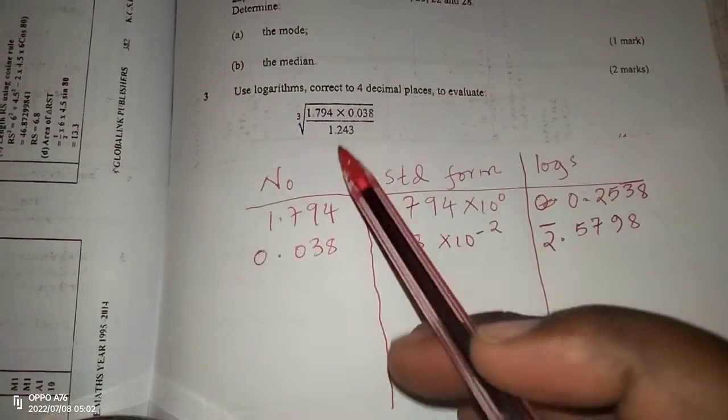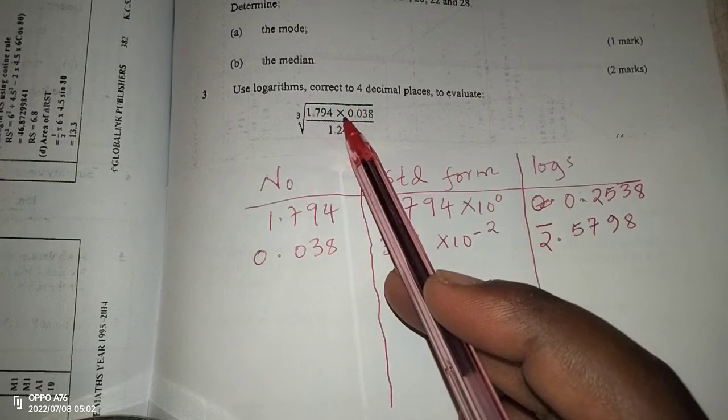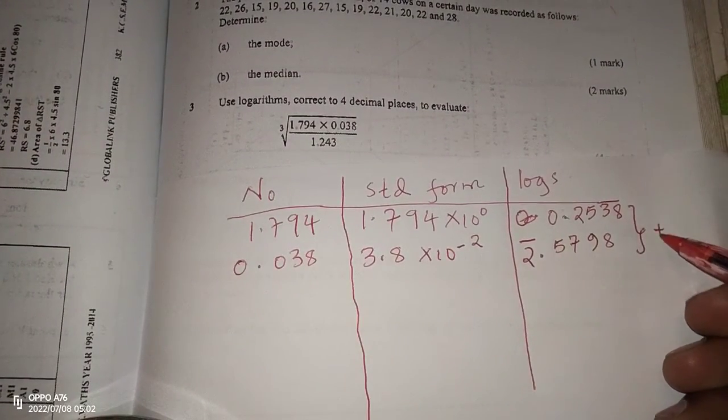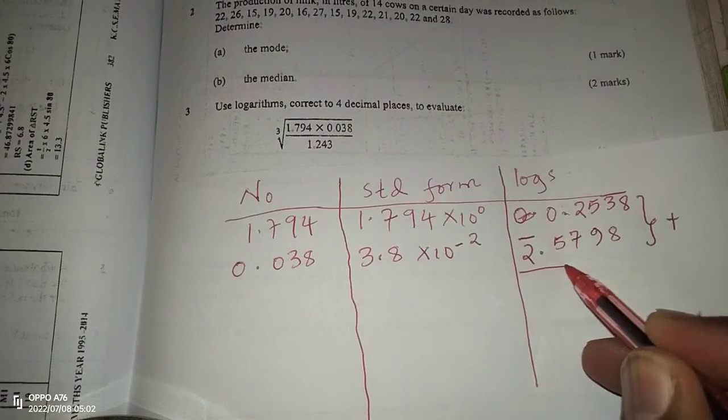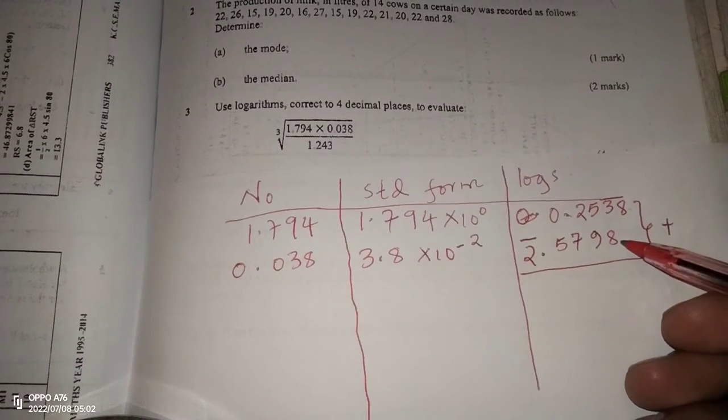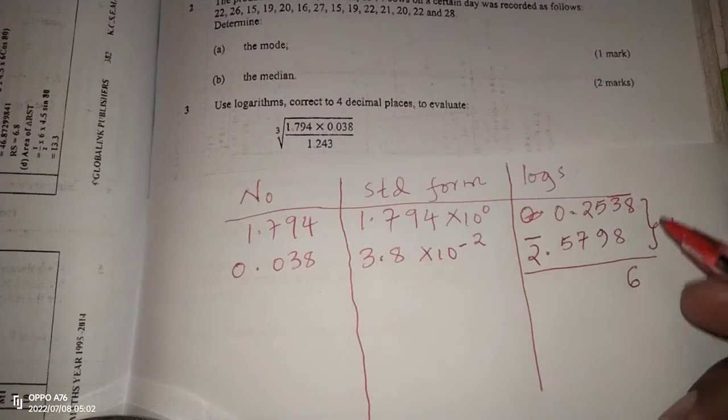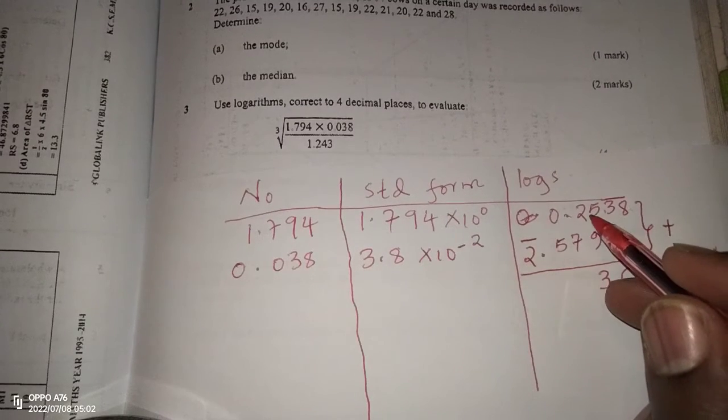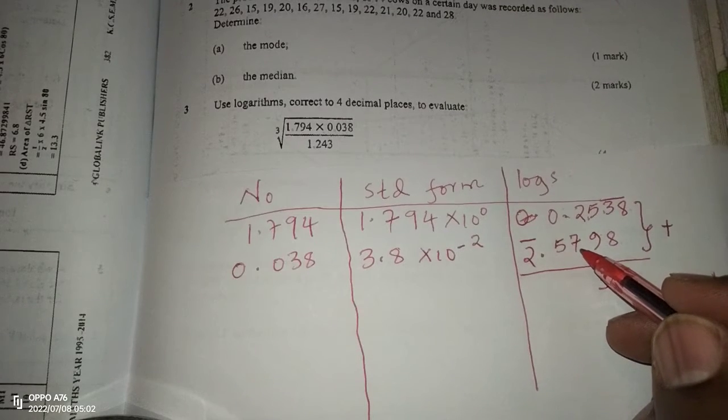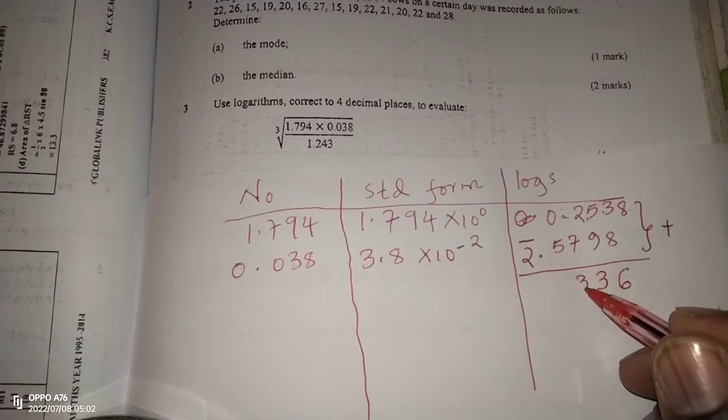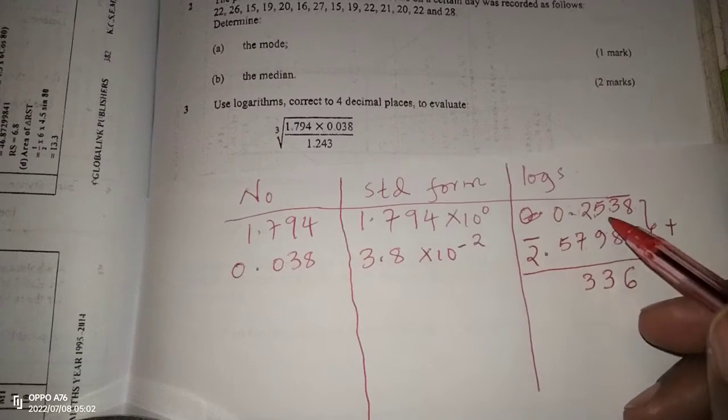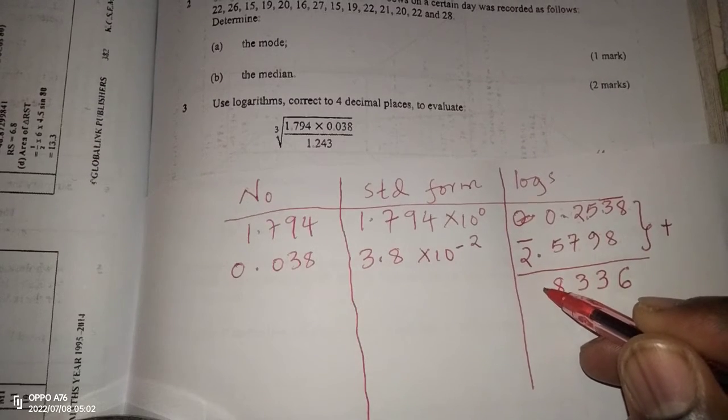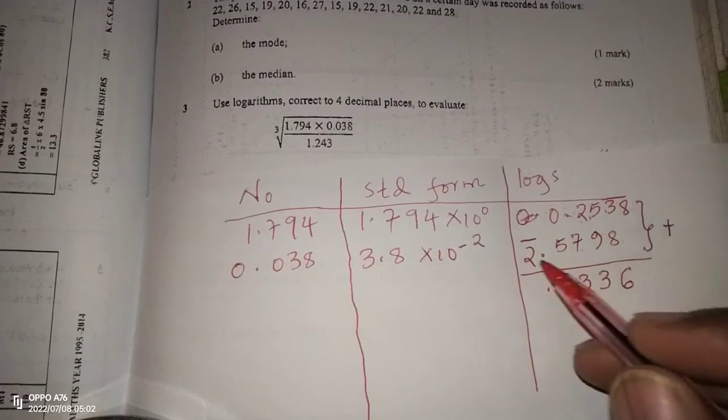So remember, in the numerator, we have the two numbers being multiplied. And when two numbers are being multiplied, we add the logarithms. So we carry 1, this becomes 4 plus 9 which is 13, so we carry 1 again. This is 6 plus 7 which is 13, so 3, we carry 1 again. This becomes 3, so 3 plus 5 is 8. Point. We have bar 2. So we have 0 plus bar 2, it remains to be bar 2 in this case.